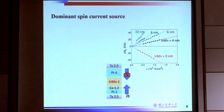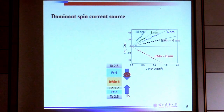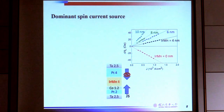IrMn itself can also generate spin current, so one may ask whether we should consider the spin current from IrMn. In our case, we think that effect is small because the resistivity of IrMn is much larger than platinum. Since the current flows in parallel through different layers, the current going through the IrMn layer is much smaller than through other layers, so even the spin current generated in IrMn is quite small compared to that from the platinum.